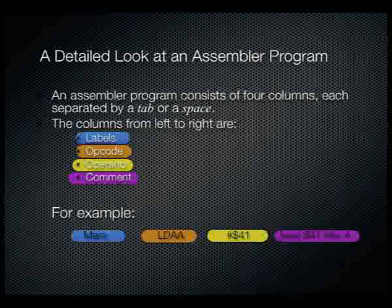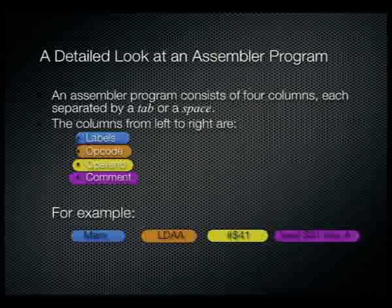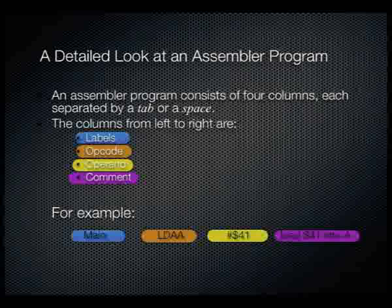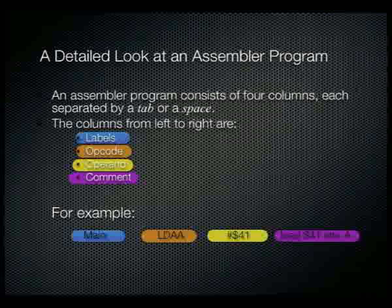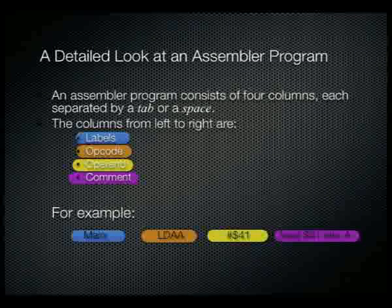When it comes to writing an assembly program, you can think of it as similar to an Excel spreadsheet where each column has a particular meaning. An assembly program is very much column-based — every column has a distinct and clear purpose. The first column is the label column, next is the opcode column, then the operand column, and the final column is the comment column. Each column is tab- or space-separated.